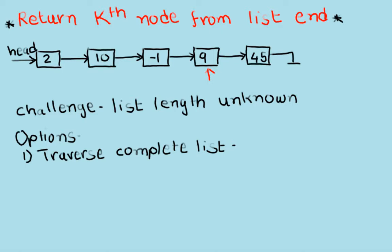The first option is to simply traverse the whole list from head to end. We start at the first node and keep moving the pointer, incrementing the length count as we visit each node. Once we know the length, we can easily find the second node from the end by starting from the head again and moving the appropriate number of nodes.